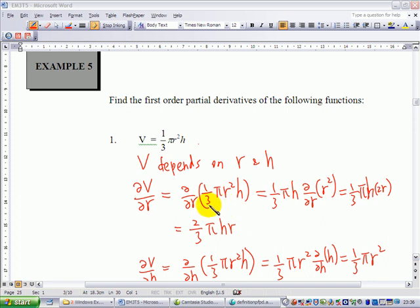H is treated as constant. Therefore, one-third pi and H are all constant when you do a differentiation. You pull out the constant factors, so you're left with differentiating R squared with respect to R.